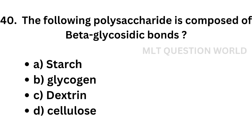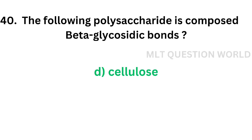Question number 40: Which of the following polysaccharides is composed of beta-glycosidic bonds? Option A: starch, option B: glycogen, option C: dextrin, option D: cellulose. The correct answer is option D, cellulose. Cellulose is a polysaccharide composed of beta-glycosidic bonds.